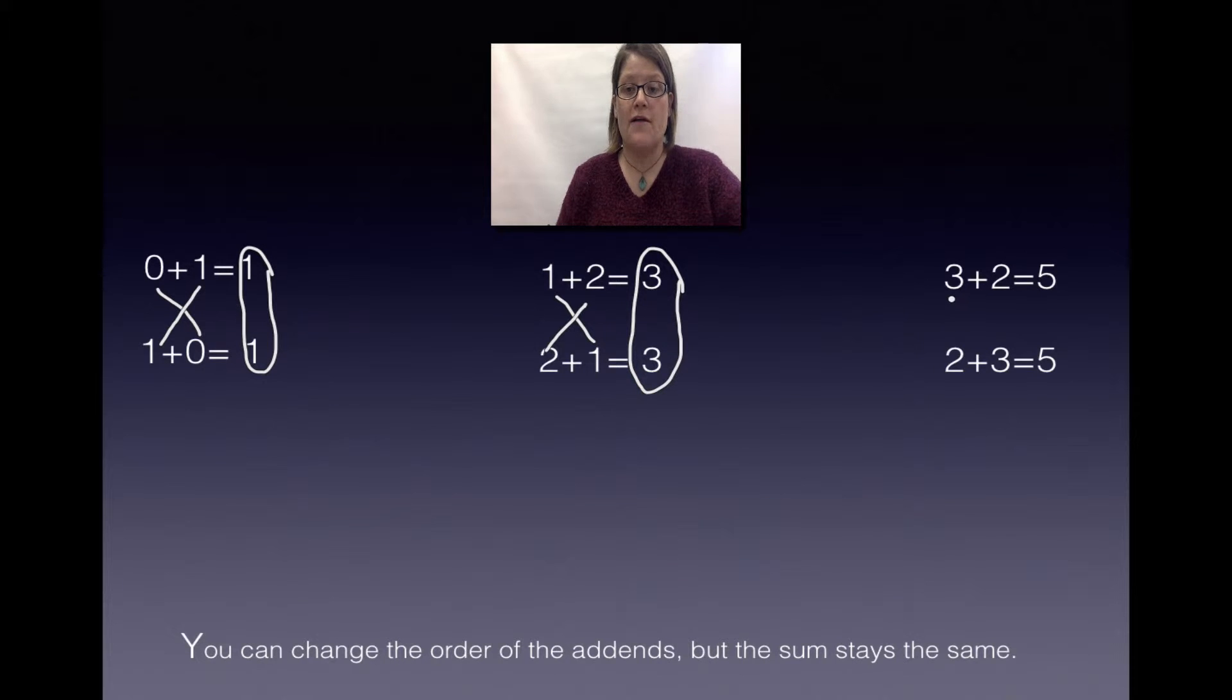Last one. Don't forget, the numbers added together, these are called the addends. They're called the what? The addends. According to the commutative property, we can change the order of these addends, while the sum right here is going to stay the same.